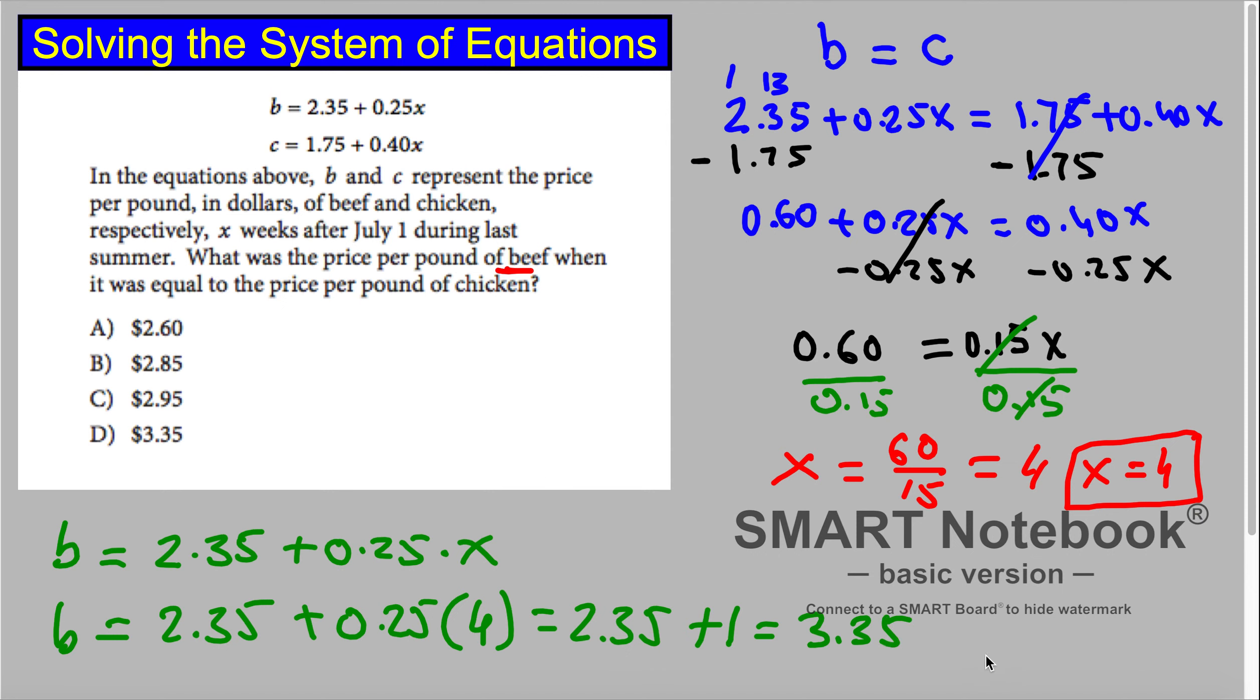And 2.35 plus 1 is equal to 3.35. So the price is equal to $3.35, and the right answer is D.